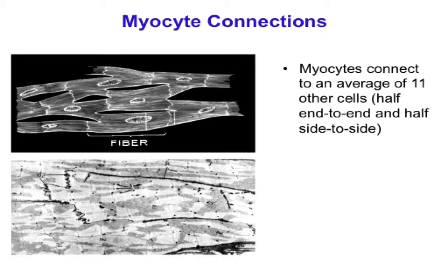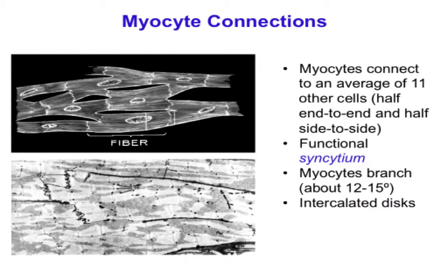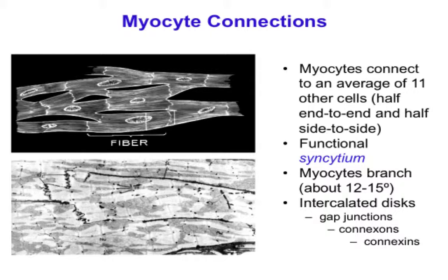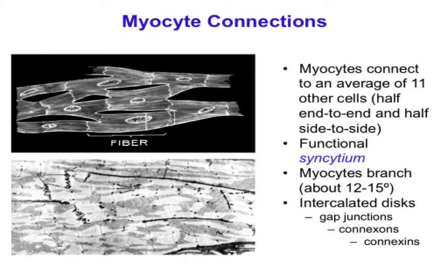The junctions between cells localize at these end processes, and the intercalated disks contain important structures including gap junctions. The gap junctions contain channels called connexons, formed by hemichannels in each of the joining myocytes. Because of the low electrical resistance of these gap junctions, electrical depolarizations propagate from one cell to the other with no synapses needed, giving rise to a term called functional syncytium.